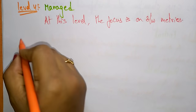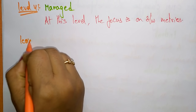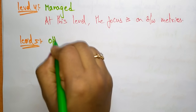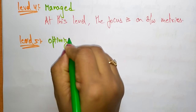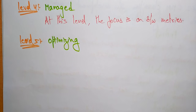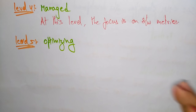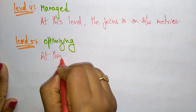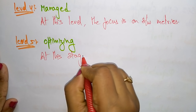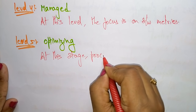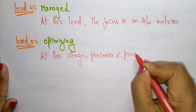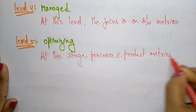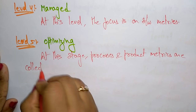Level five is the last level in the CMM. Level five indicates the Optimizing stage. If your organization is in the optimizing stage, then you can make it a level five CMM. At this stage, processes and product metrics are collected.